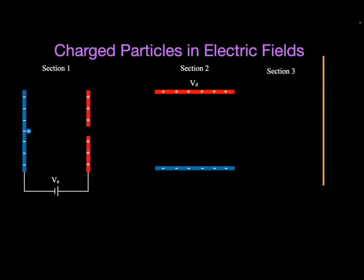We are going to go over a full problem where we take this charged particle, which is here against this negatively charged plate — this negative particle. We're going to release it. It's going to move across here and hit this screen. We're going to go through first a qualitative explanation about how it does that, and then do all the calculations for the acceleration voltage, the deflection electric voltage, and everything that happens in Section 3.